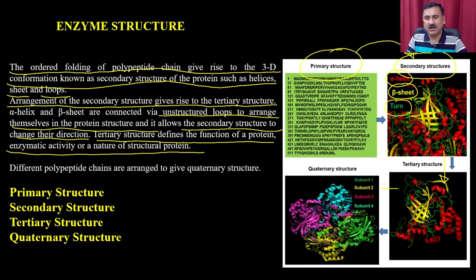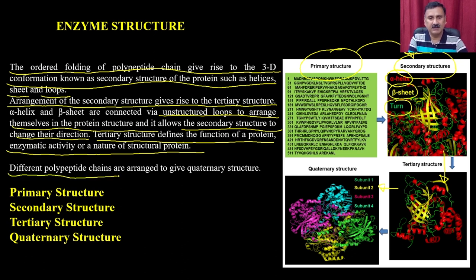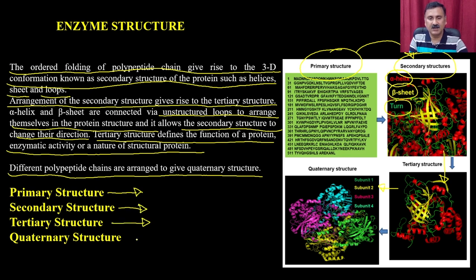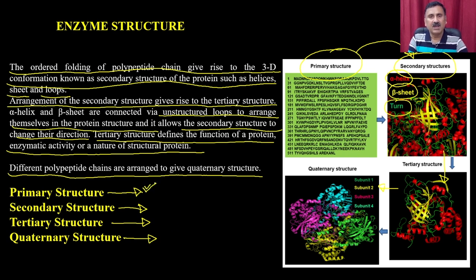Tertiary structures fold into the quaternary structure in cases where the protein has more than one subunit. So the enzyme has different levels of structural organization: primary structure, secondary structure, tertiary structure, and in some cases when the protein has multiple polypeptide chains, it also has a quaternary structure. Let us start discussing about the primary structures.